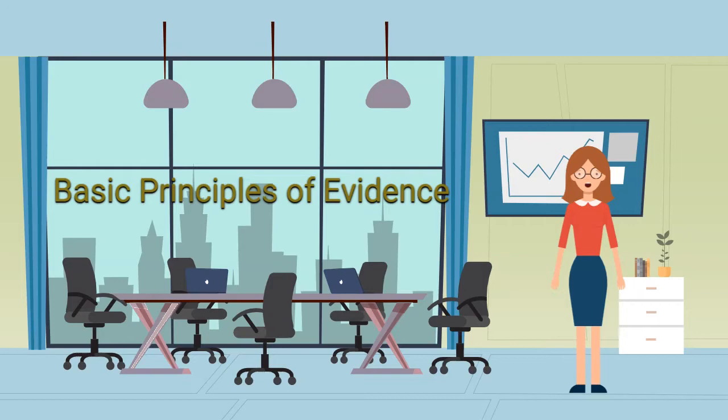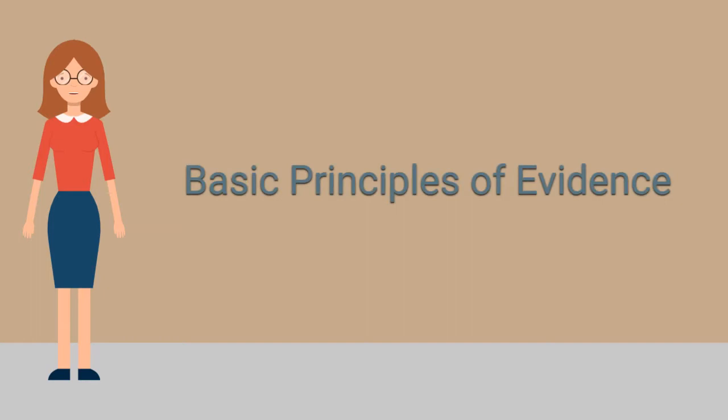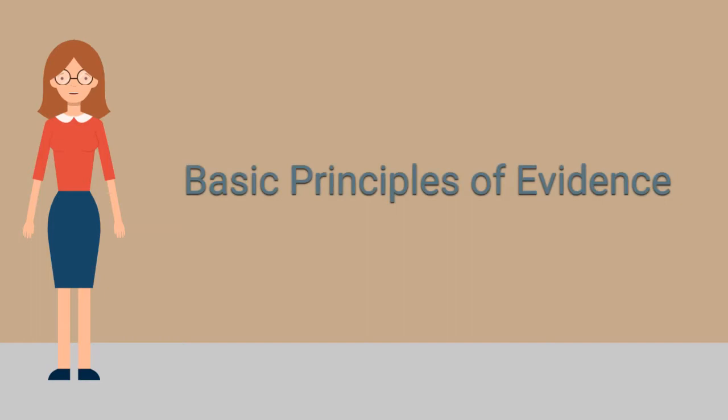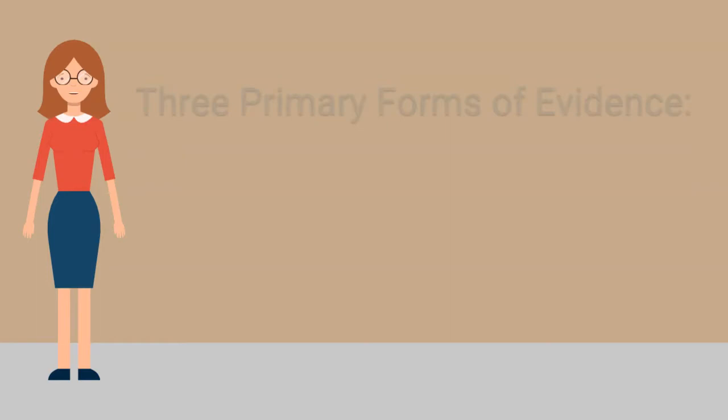Aside from being relevant, it is also essential to weigh the importance of evidence by examining the evidence source, distinguishing whether the evidence is direct or circumstantial, and assessing the witness's credibility. Before discussing direct versus circumstantial evidence, it is essential to know the three primary forms of evidence.